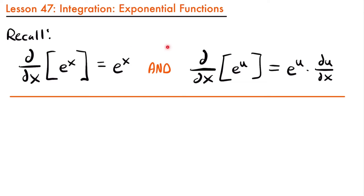Since we know the derivative rules for e to the power of x, we should be able to figure out the integration rules, because integration is the opposite of finding the derivative — integration and differentiation are opposite operations. When we take the integral of something, we are trying to find a function whose derivative is that function we are integrating — we are trying to find that antiderivative.